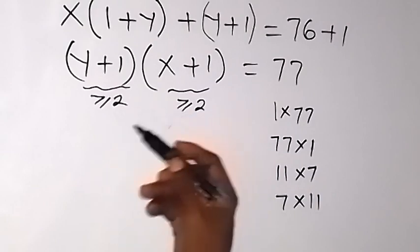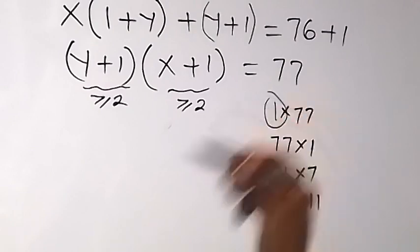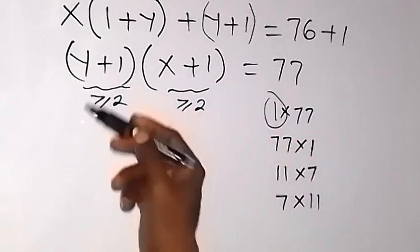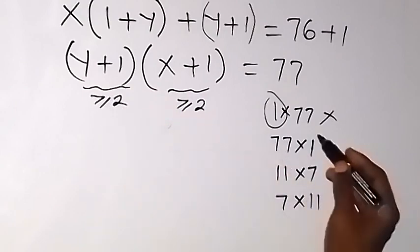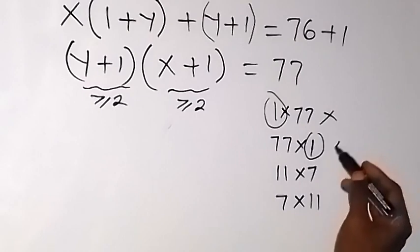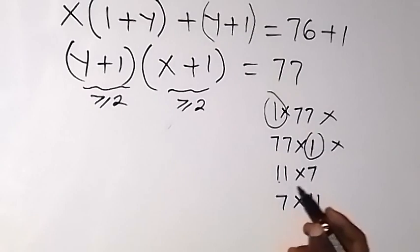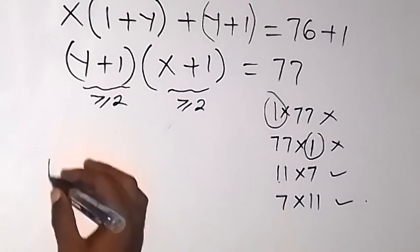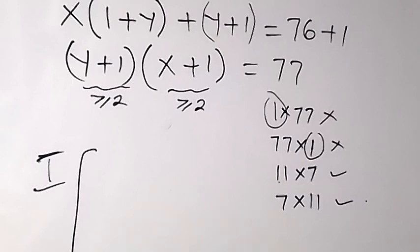Since each factor must be greater than or equal to 2, the pairs 1×77 and 77×1 will not work because one factor equals 1 in each case. The pairs 11×7 and 7×11 both have factors greater than or equal to 2, so these are the ones that will work.